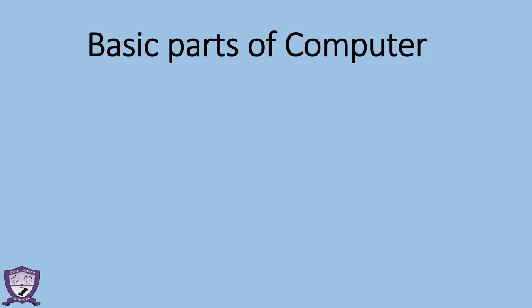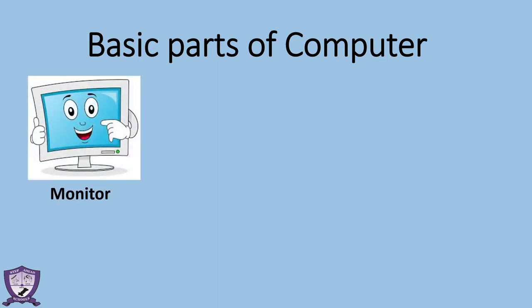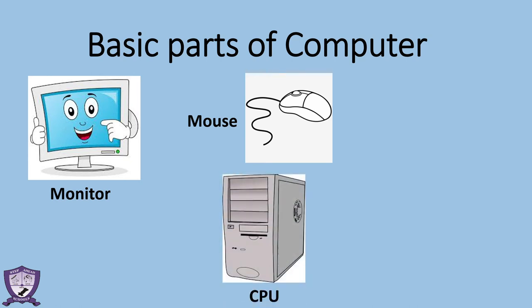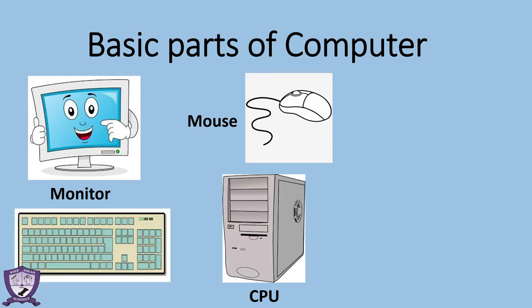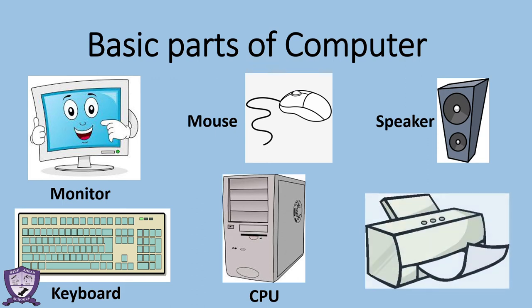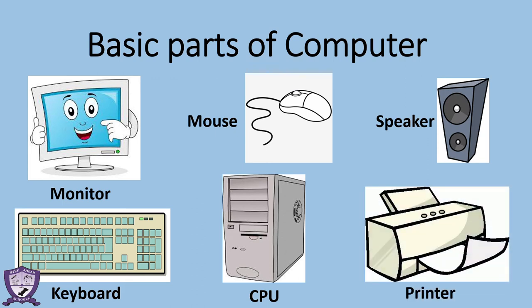What are the basic parts of a computer? Monitor, Mouse, CPU, Keyboard, Speaker, Printer. Those are some basic parts of a computer.